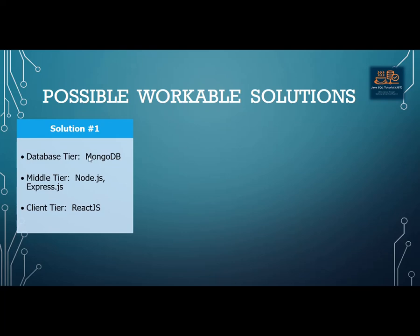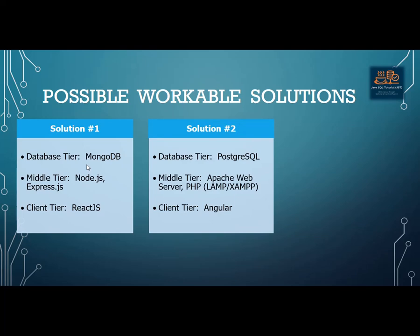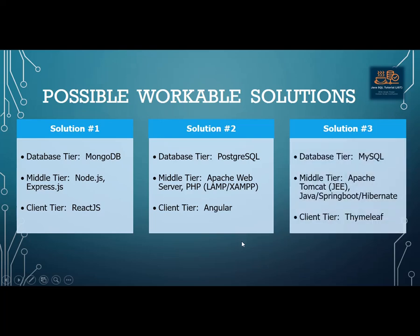Once I understand what they want, I have some possible technology stack solutions. Solution one: MongoDB for the database, Node.js for the application server, and React.js for the client. Solution two: PostgreSQL, a PHP LAMP stack in the middle tier with Apache web server, and Angular for the client. Solution three: MySQL database, Tomcat with JEE as a Java-based solution in the middle tier, and Thymeleaf for the client. After brainstorming, talking, knowing the timeline and the features they want, I chose solution number three.